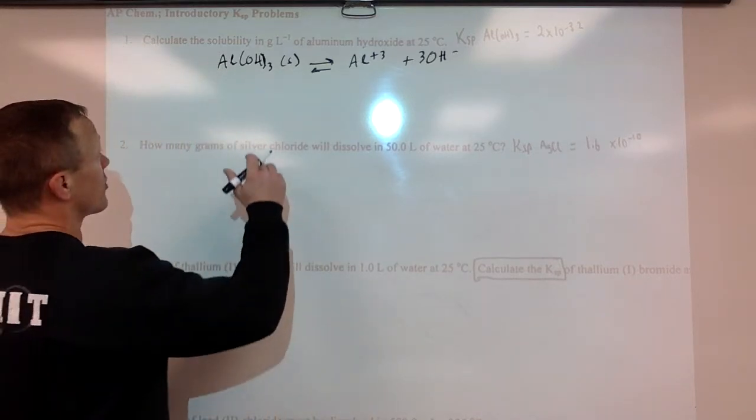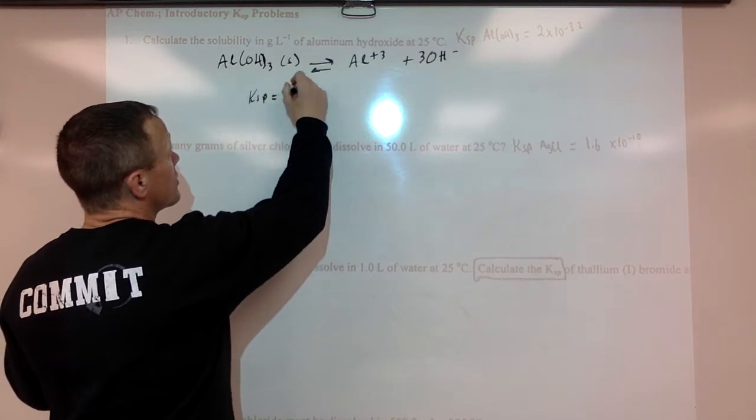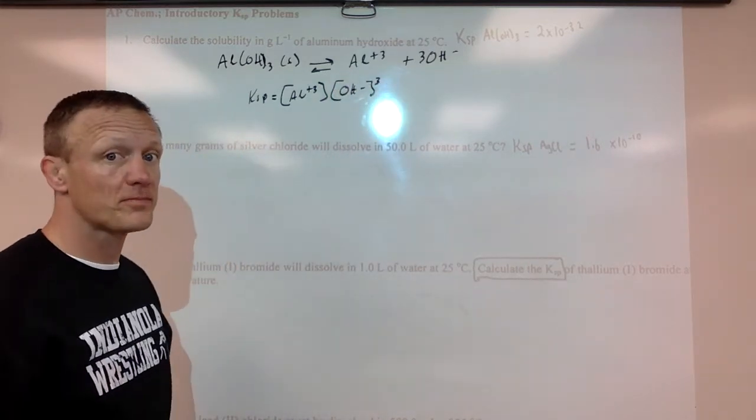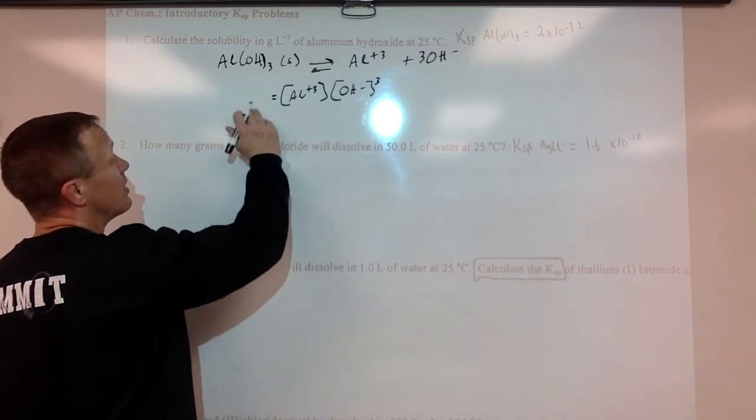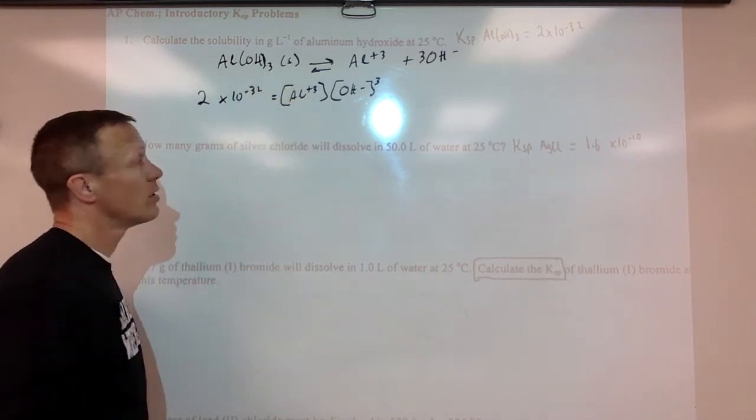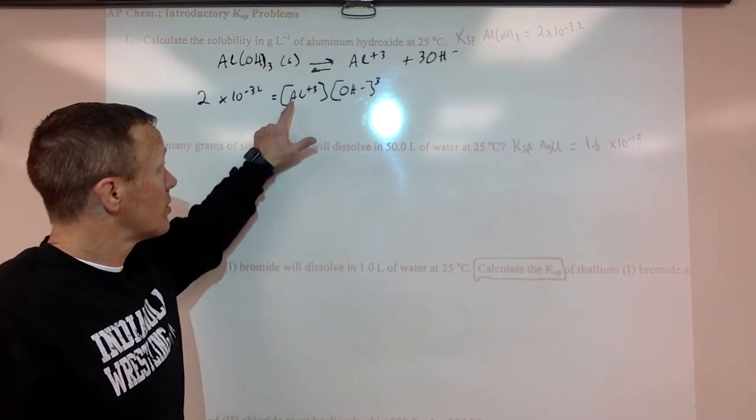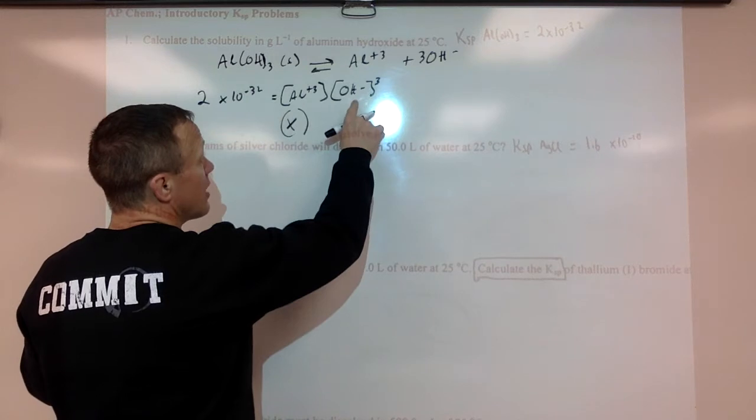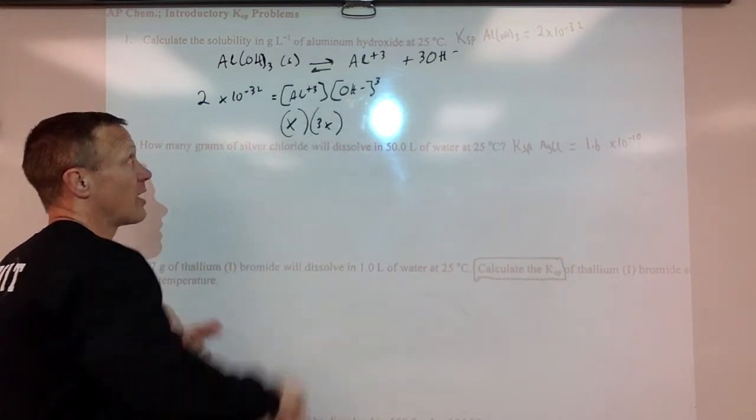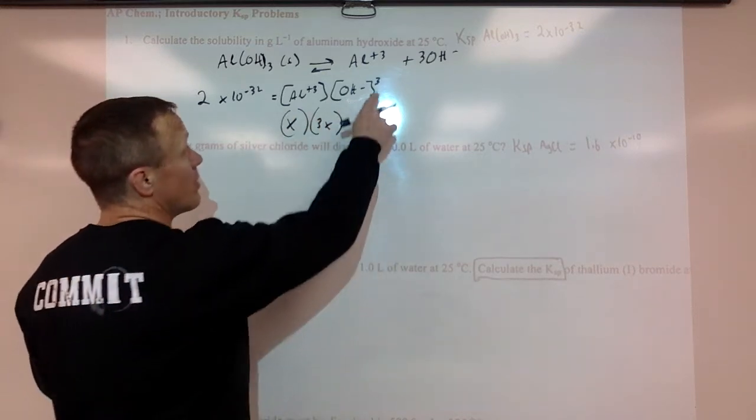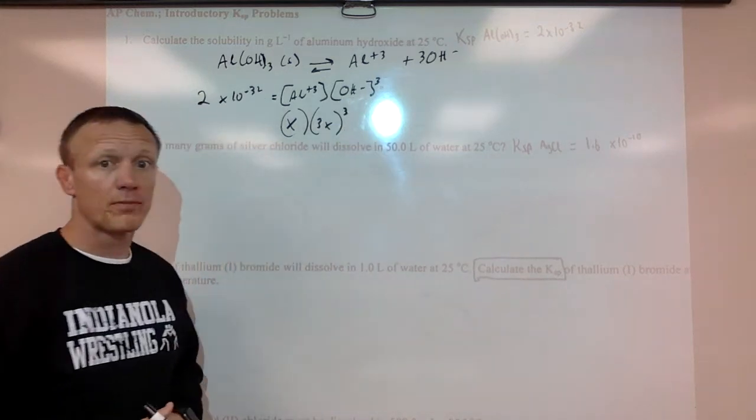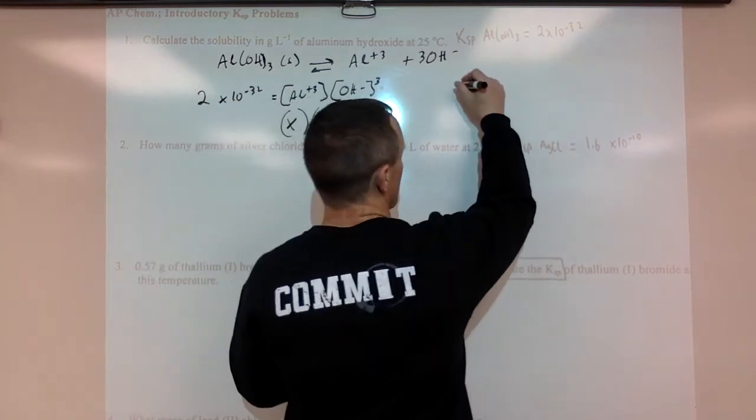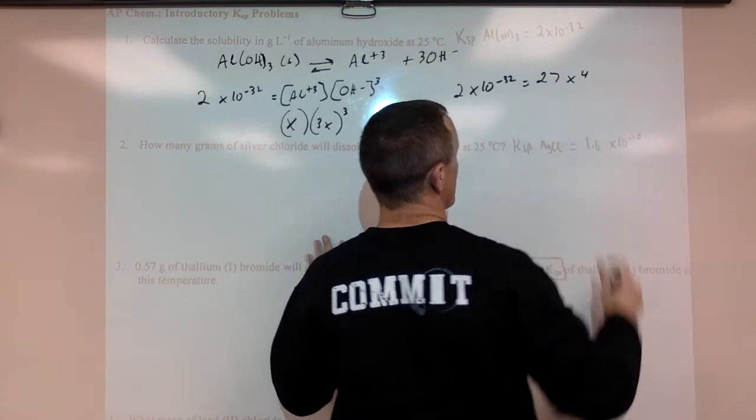So to ask the solubility, we'll set up our KSP expression. KSP equals concentration of aluminum ions to the first power times hydroxide ions cubed. Sorry about the glare. We'll put the KSP in there, so it'd be 2 times 10 to the negative 32nd power. This will be all those times we're going to put in some values. So if I put in X for this molarity, this would be 3X. So I'm going to put in X and 3X because this concentration will be 3 times that. This is cubed. So 3X cubed, 3 times 3 is 9 times 3 is 27X cubed.